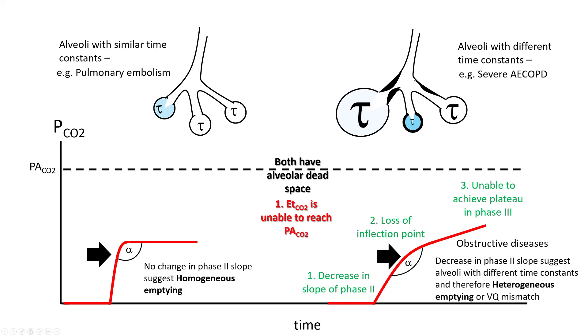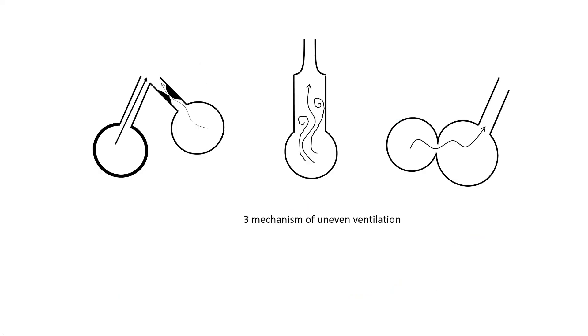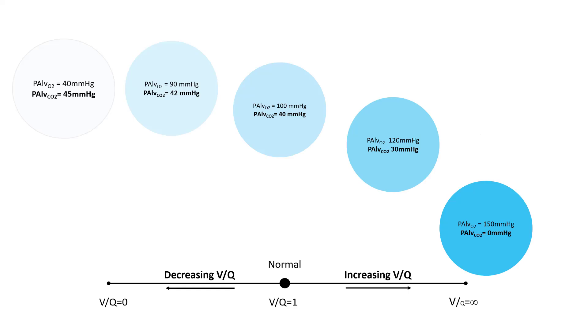There are a couple of mechanisms of uneven ventilation. You can have alveoli with different time constants, alveoli with obstruction and increased stiffness. Other conditions like emptying of your alveoli into dilated bronchial tubes can lead to uneven ventilation.